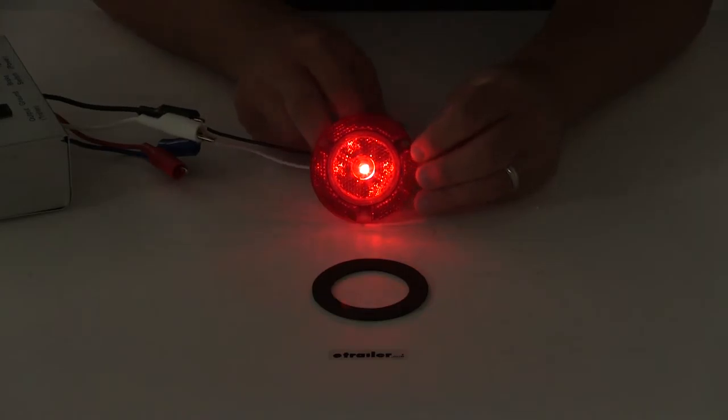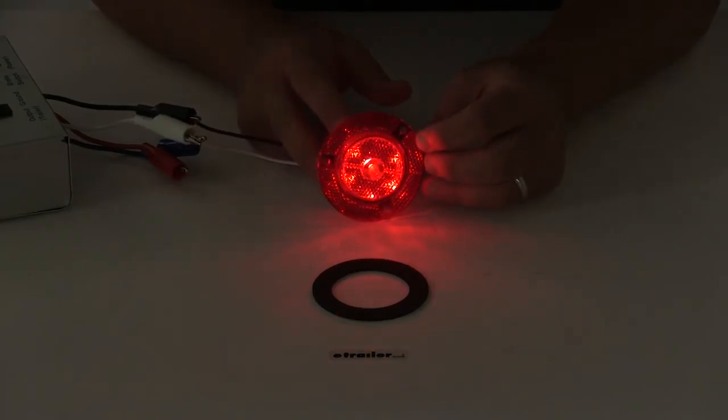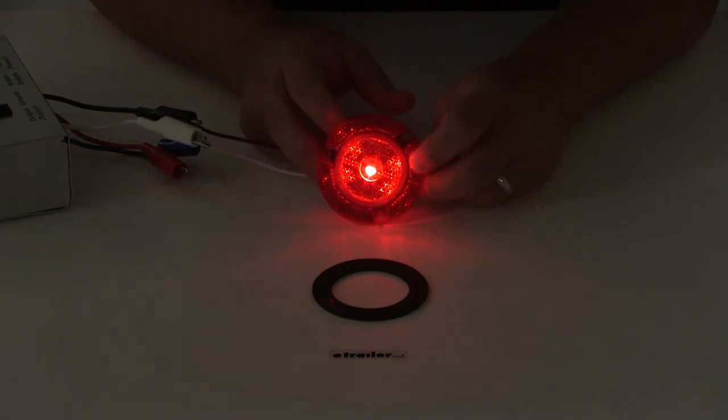You can see the light sends out a nice, strong, consistent signal. With seven LEDs, the multi-diode design optimizes light output. You can really see the reflux reflector taking effect—it covers the entire lens except in the center.